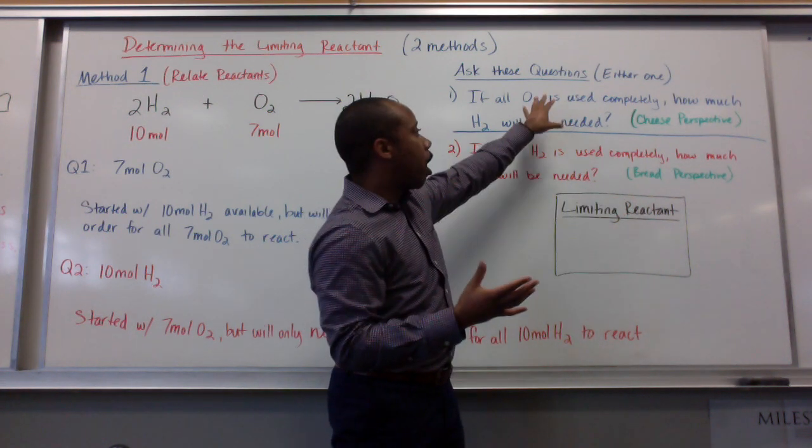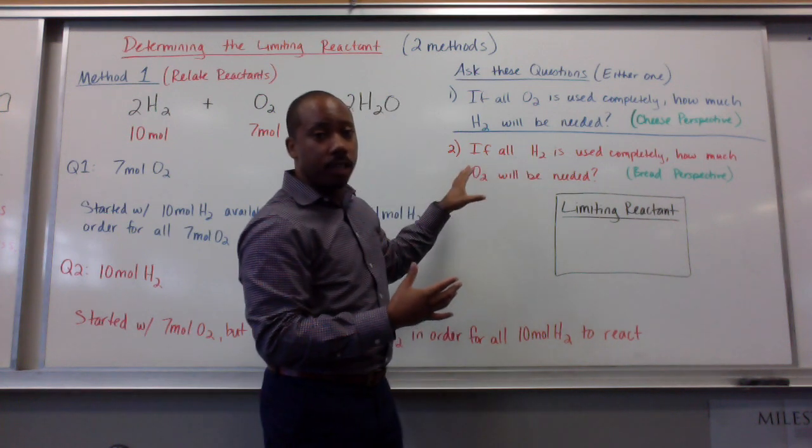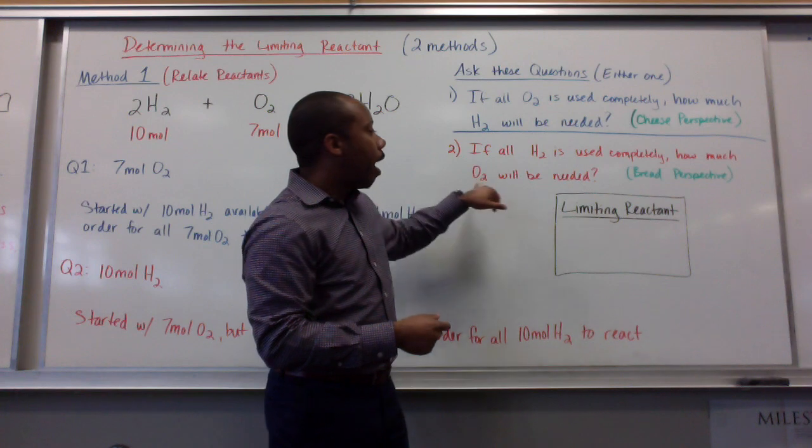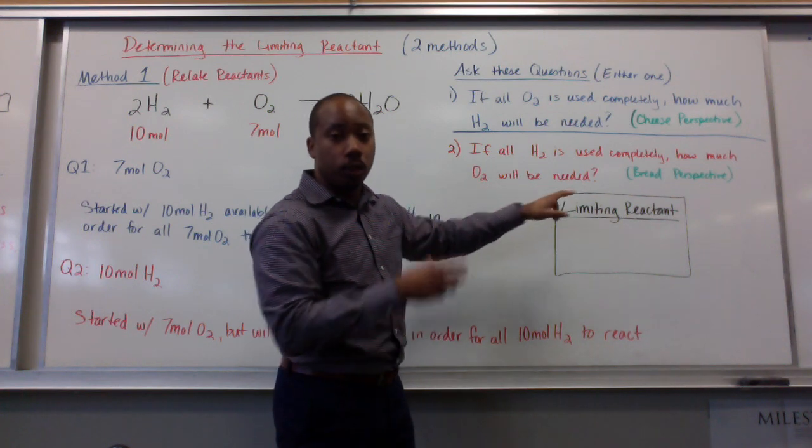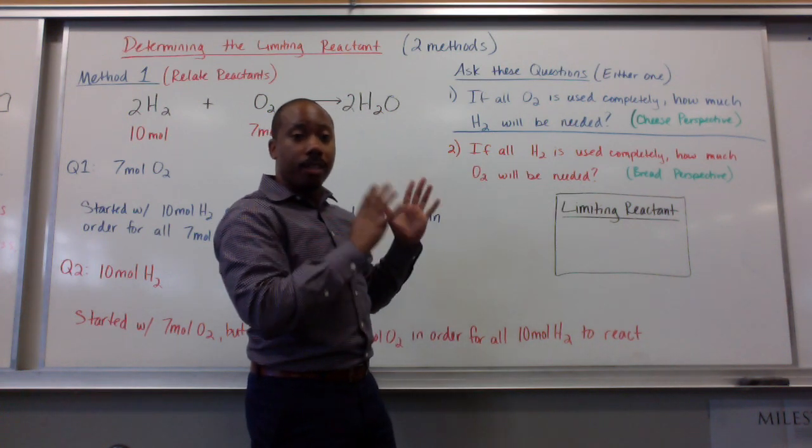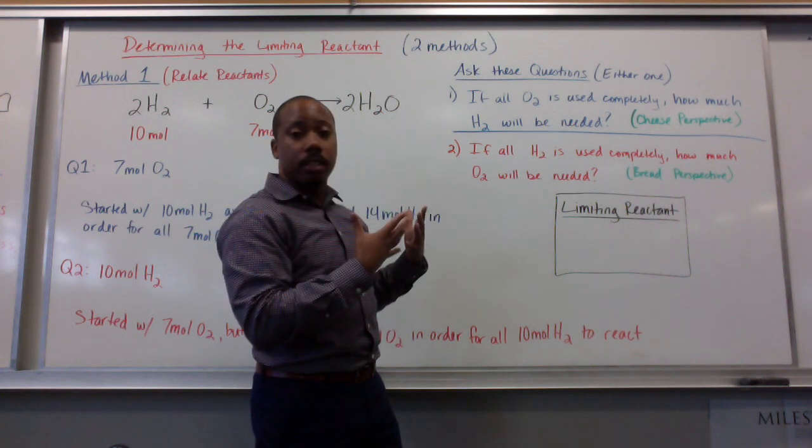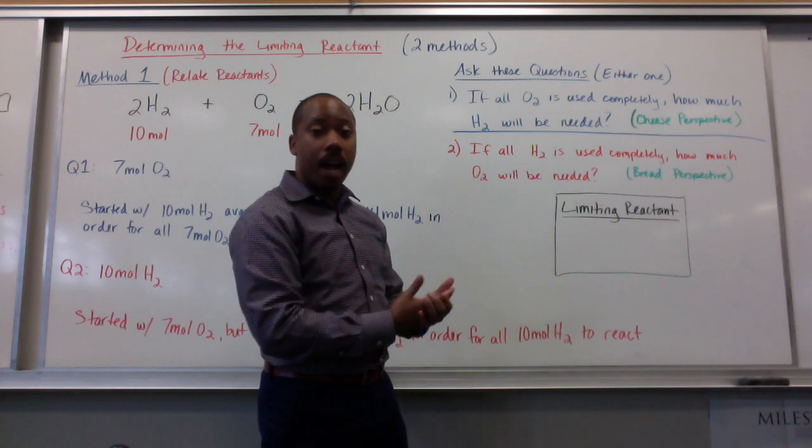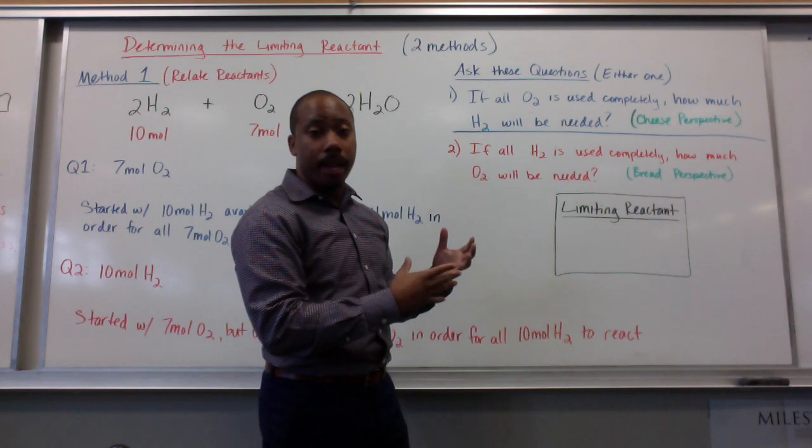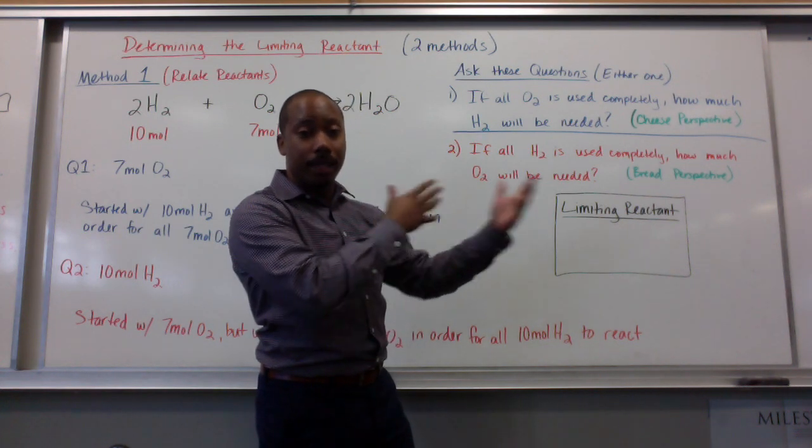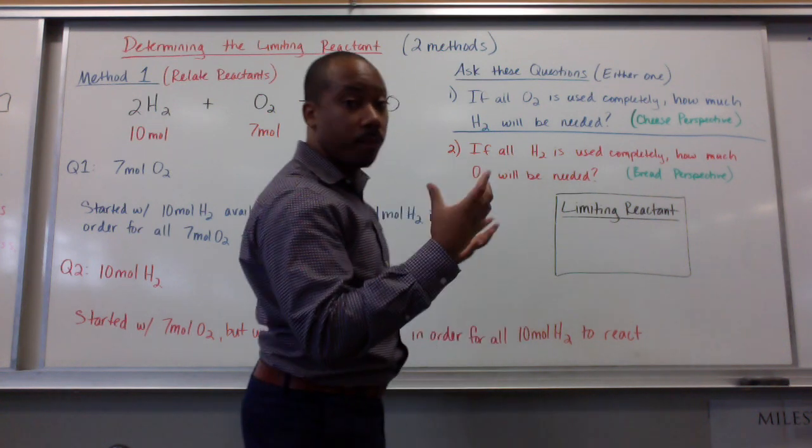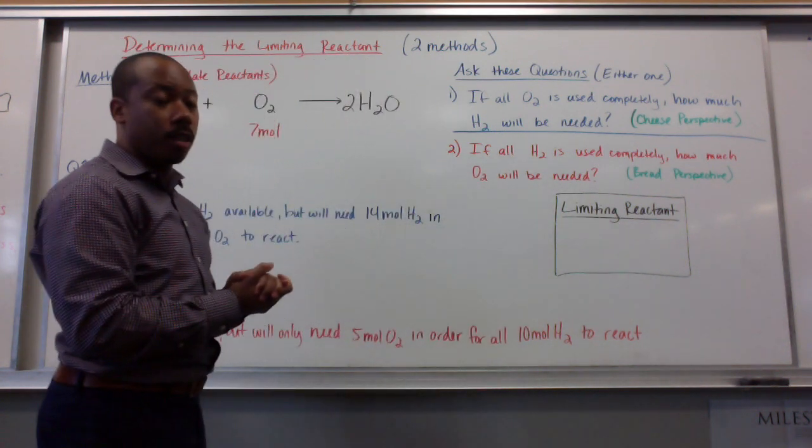So that's looking from oxygen's perspective. The second question is, if all H2 is used completely, how much oxygen will we need? It's from the opposite perspective. It's from the bread's perspective. So the bread's saying, it's 10 slices of bread. How many pieces of cheese will I need? Well, the bread's going to need 5 slices in order to make as many sandwiches as it can. Because it's 2 slices of bread per a piece of cheese.